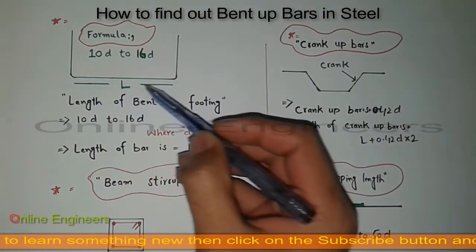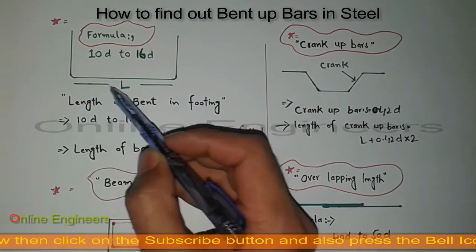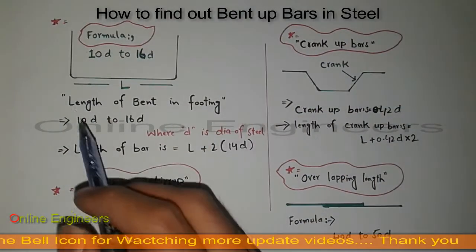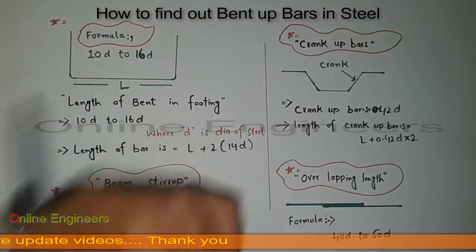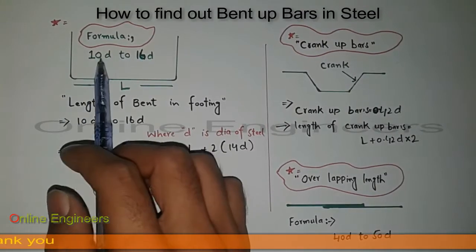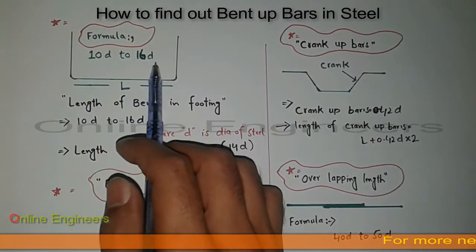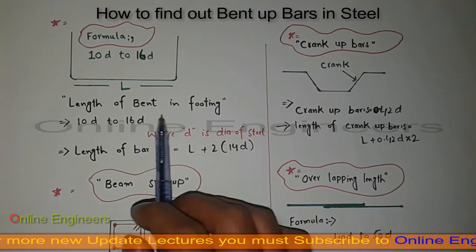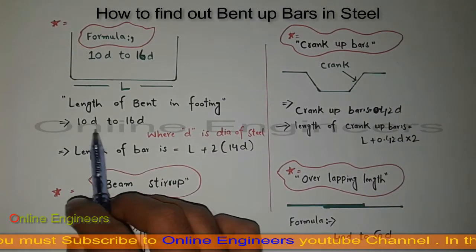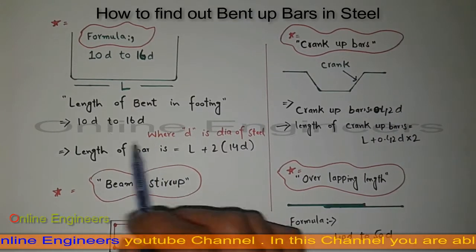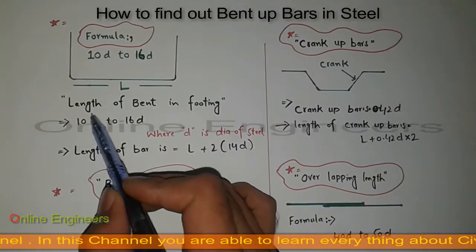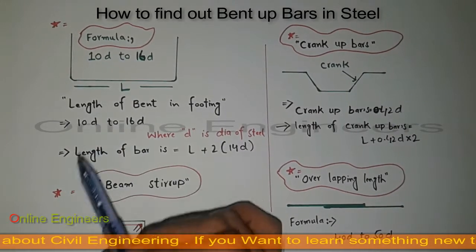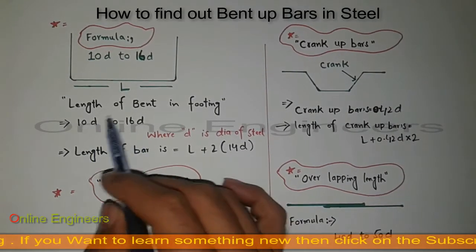Capital L is the actual length of bar. Now I want to find out the bent of this one bar. The formula for this is 10d to 16d — you can take a value between these two. To find out the length of bent in footing, we use 10d to 16d, where d is the diameter of steel. 10 is the constant and d is the dia of steel.